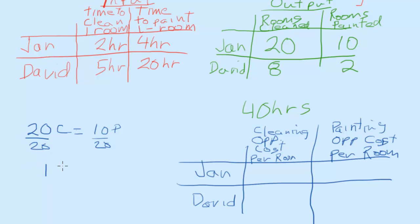And so we have one room cleaned. We have to give up one half room painted. So we'll put that right here, opportunity cost is one half. Or vice versa, if I do 10 rooms painted, 20 divided by 10, we're going to have opportunity cost of 2. So in other words, if she spends time cleaning a room, she gives up half a room painted. If she spends time painting a room, she gives up two rooms she could have cleaned.